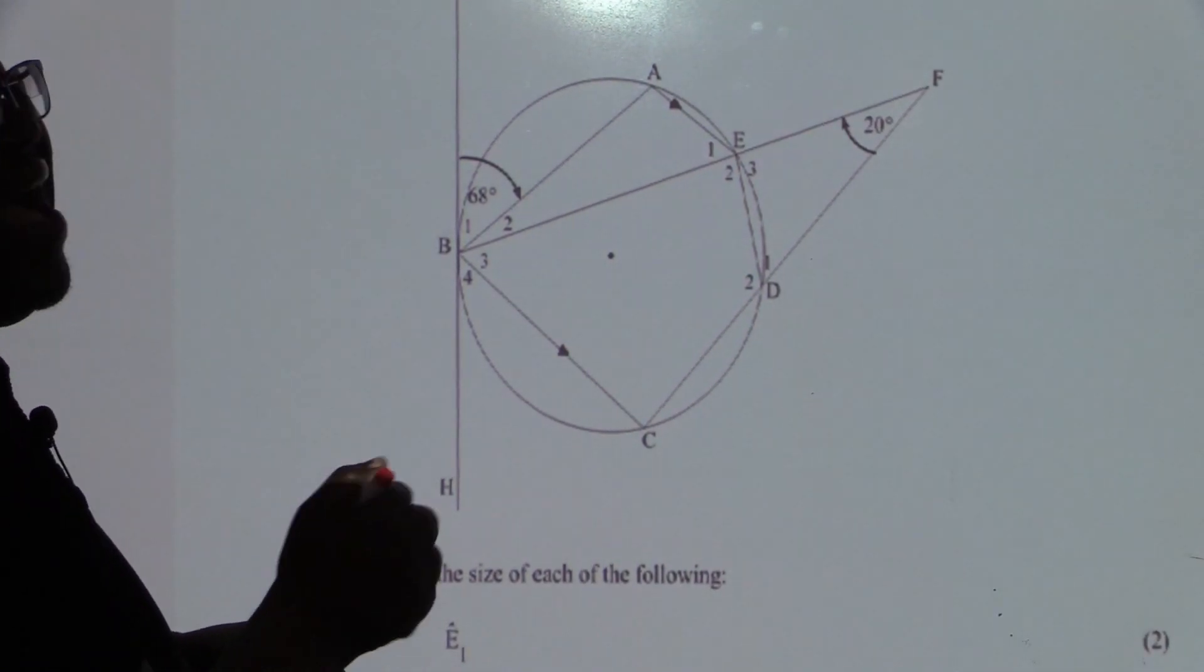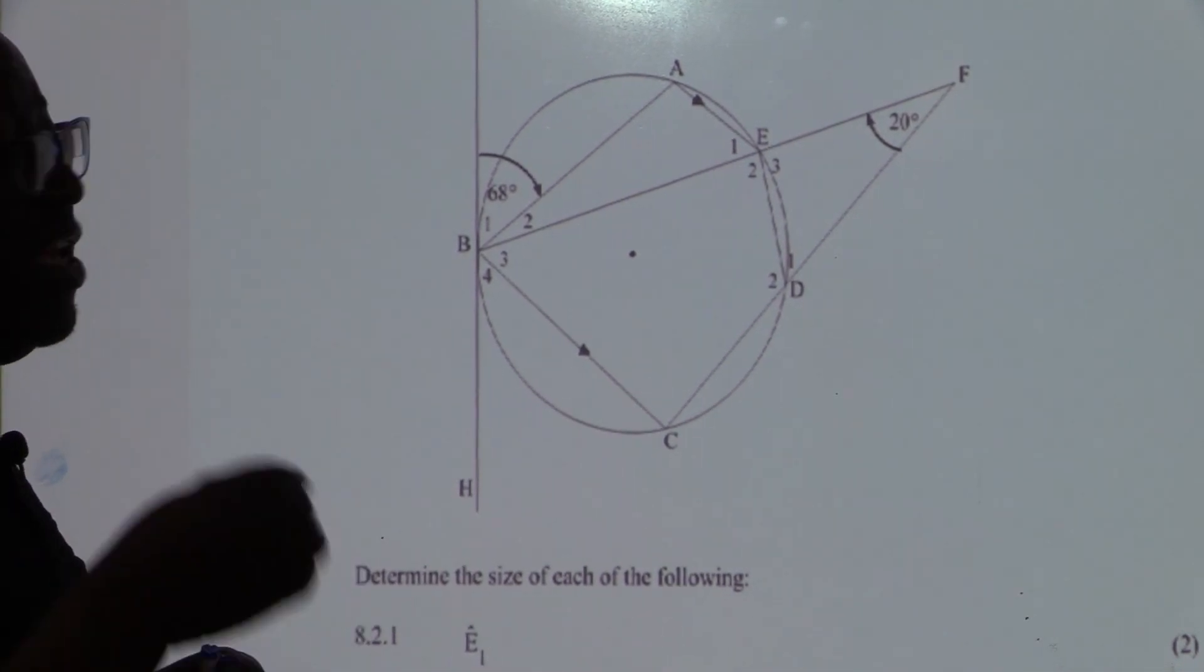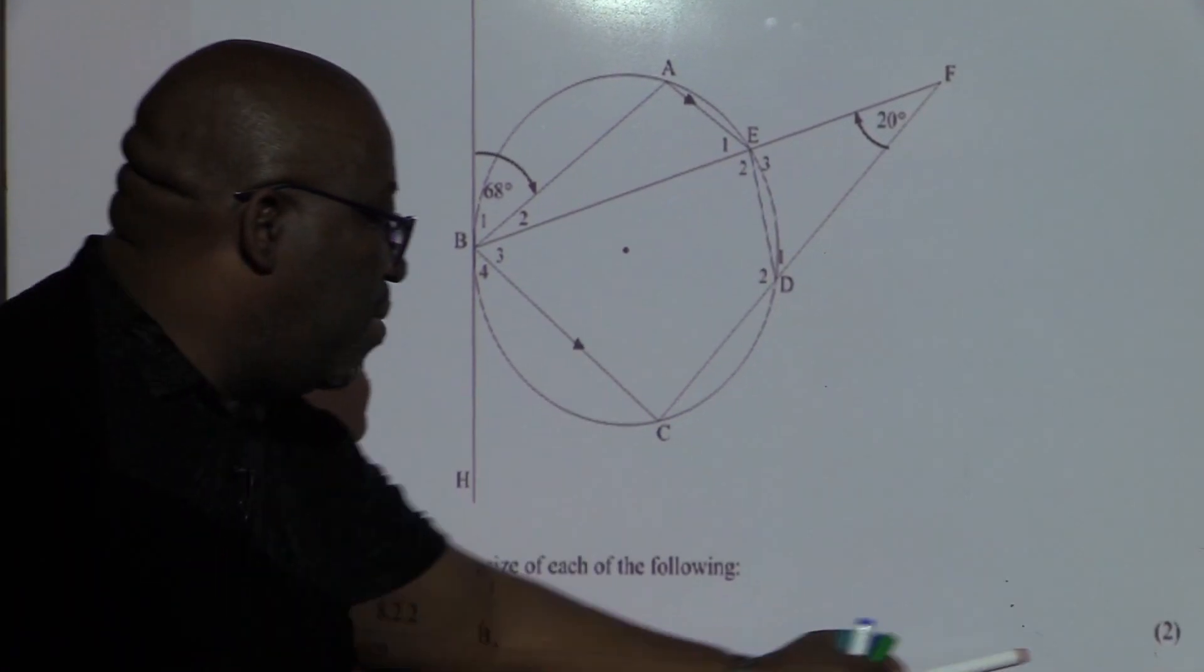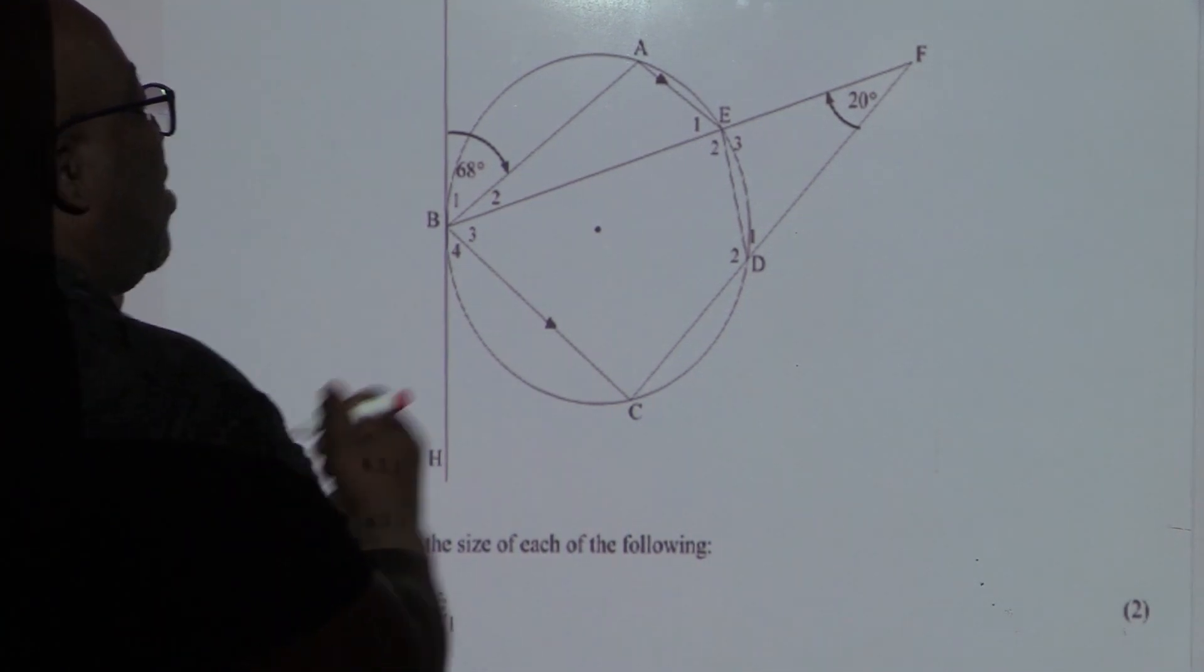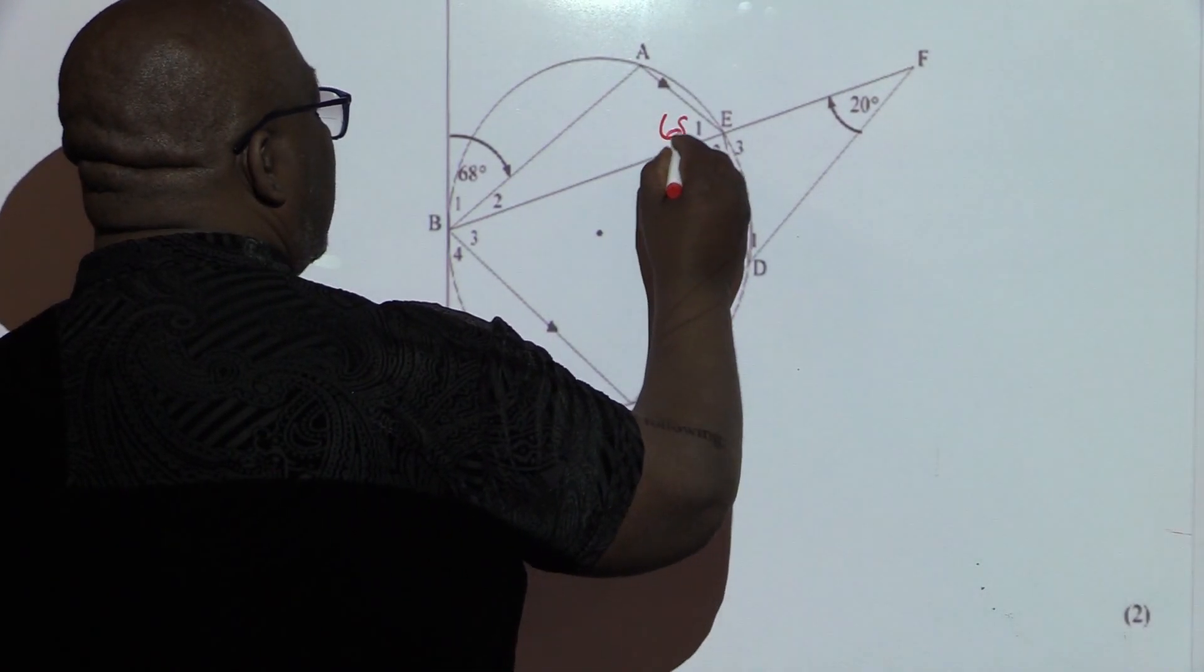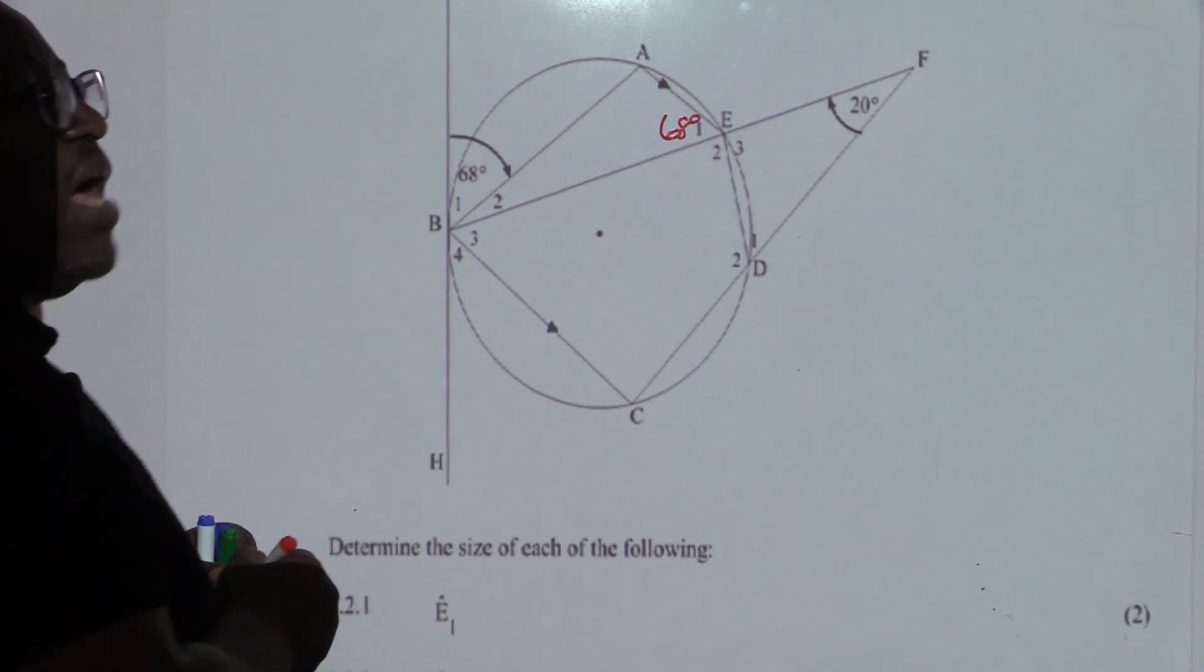So, E1 is the same as 68. Reason, tangent-chord theorem. There is a mark for 68 and there is a mark for tangent-chord theorem. It's only two marks. So, I know that this angle is also 68 degrees. Reason, tangent-chord theorem.